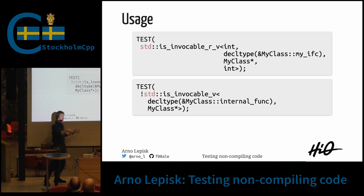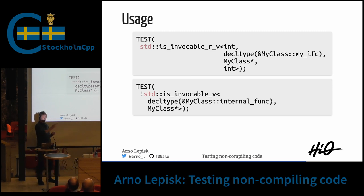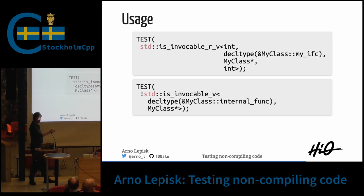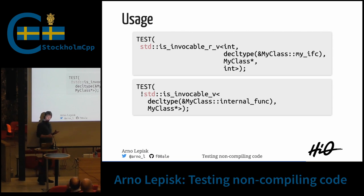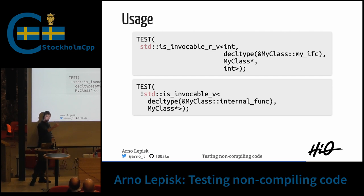A member function pointer isn't a normal function pointer, it's a strange beast. The comment was that they are different types always, as they are member pointers. I don't know if the name is really part of the type, but I think it's the offset in the class that's part of the type in some way.